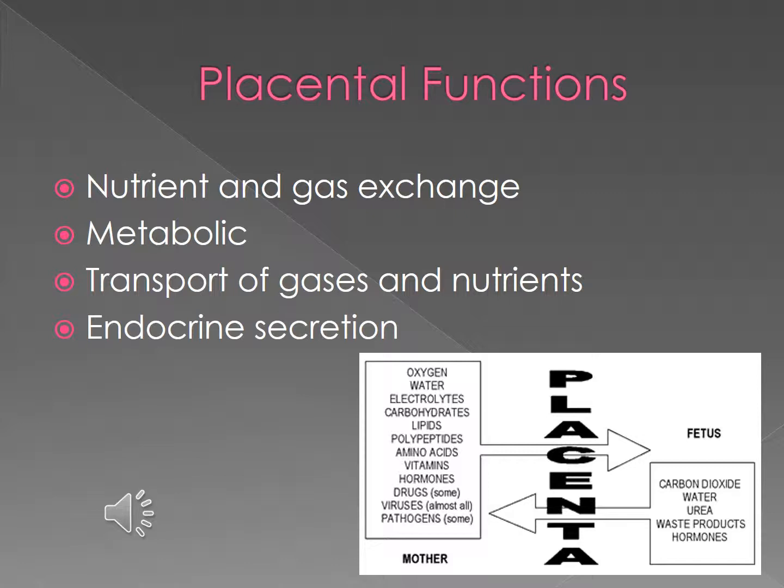Transport of gases and nutrients is bidirectional, going between the placenta and the maternal blood and vice versa. Gases, nutrients, hormones, electrolytes, antibodies, wastes, and also several drugs are transported across the placental membrane. The placenta also has an endocrine secretion function.